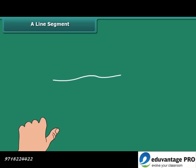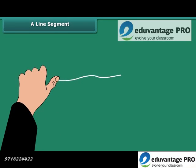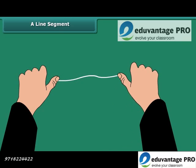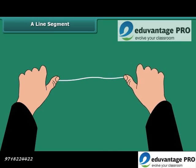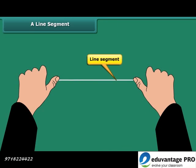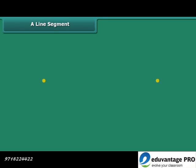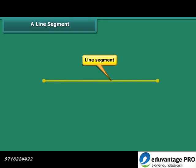Take a thin thread and hold it without slack — it represents a line segment. The shortest distance between two points is known as a line segment. The starting and ending points of a line segment are called its end points.